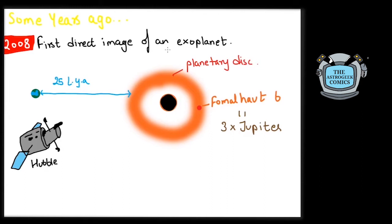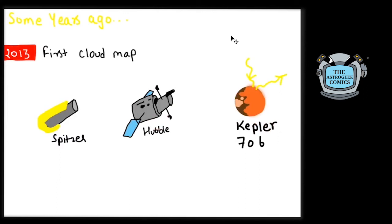In 2013, using the data from Hubble and Spitzer, the first cloud map was created for the exoplanet Kepler-7b and it was found that light was bouncing off its western hemisphere clouds.